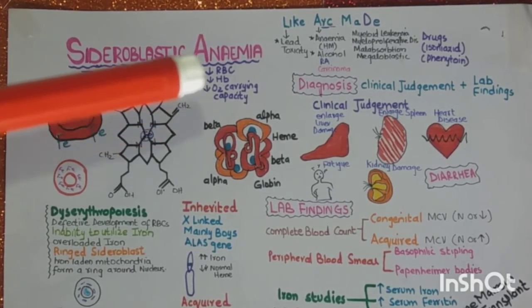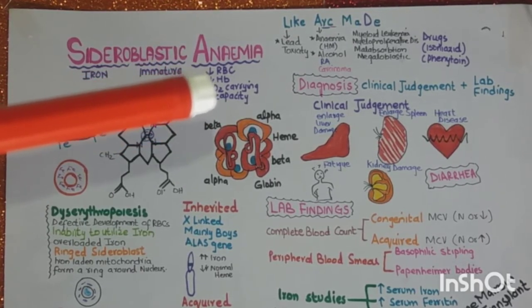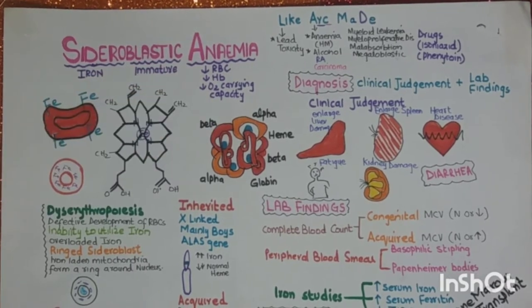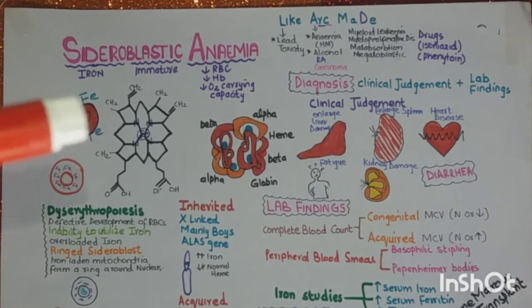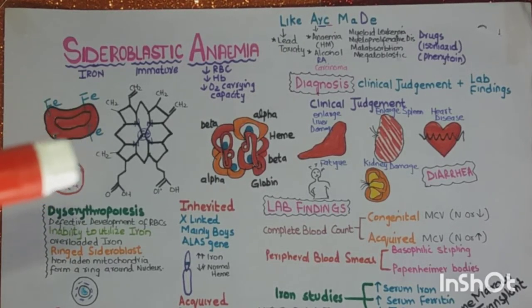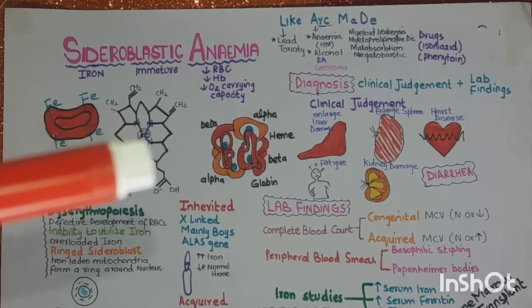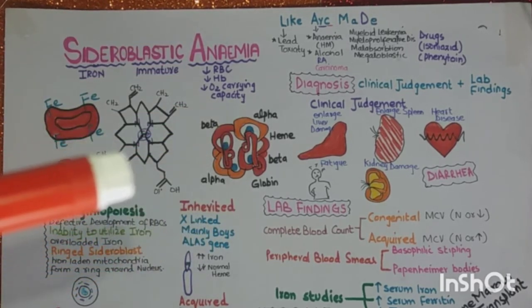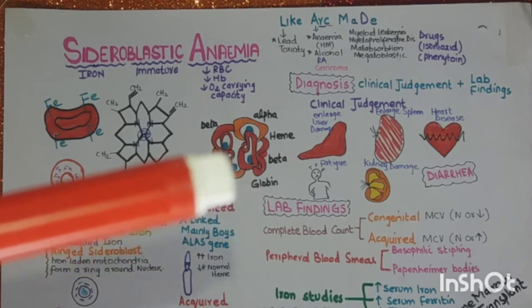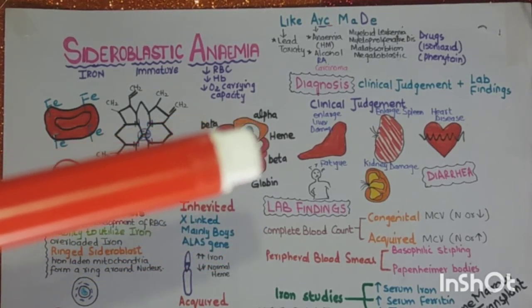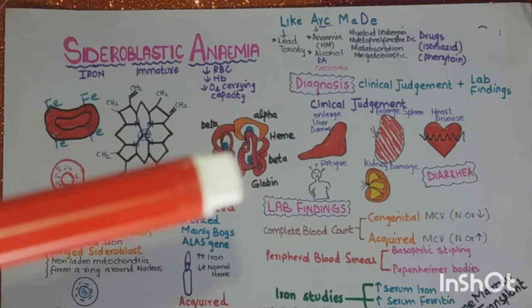As you can see in the diagrams, there is iron accumulated in the RBC because there is a defect in the formation of the porphyrin ring. In hemoglobin, which consists of the heme and the globin, it cannot carry oxygen — its primary function — properly.